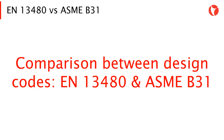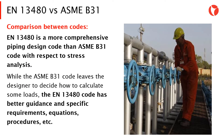Comparison between design codes EN 13480 and ASME B31. The EN 13480 is a more comprehensive piping design code than the ASME B31 code with respect to stress analysis.